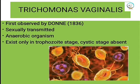Trichomonas vaginalis is the main organism which causes trichomoniasis. This parasite was first observed by Donné in 1836 from vaginal secretion. It is a sexually transmitted and anaerobic organism. A key feature of this parasite, compared to other flagellates, is that it exists only in the trophozoite stage — the cystic stage is absent.